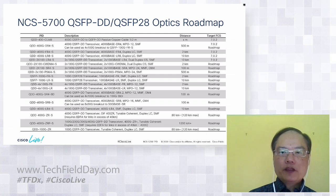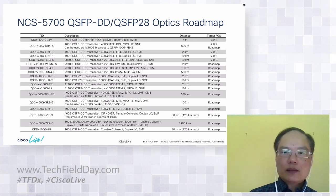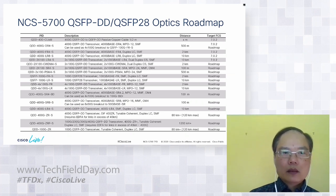This is a comprehensive table for the 400-gig optics roadmap for the NCS 57 line cards for your reference. Some are already available at FCS in IOS XR 7.0.2 and others are on the roadmap.